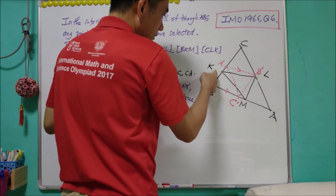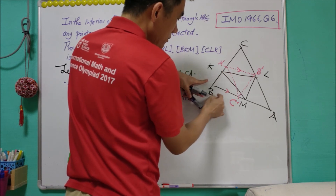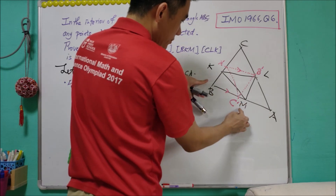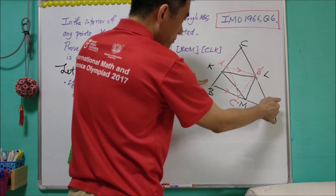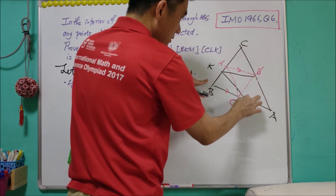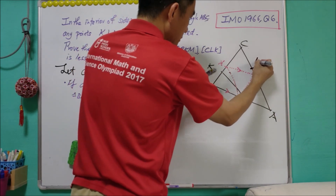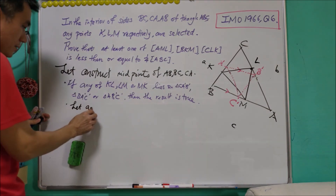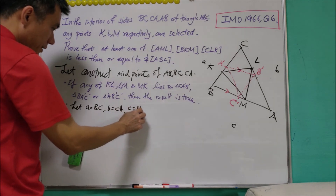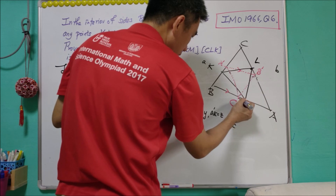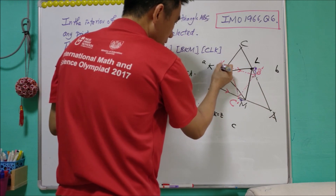To avoid this, if M is within AB then M cannot be within BC prime, so M should be within C prime A. If M is within C prime A then L cannot be within A prime B, so L must be somewhere between C and B prime. We let a = BC, b = CA, c = AB, and let C prime M equal x, B prime L equal y, and A prime K equal z.